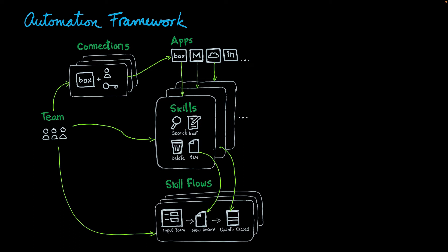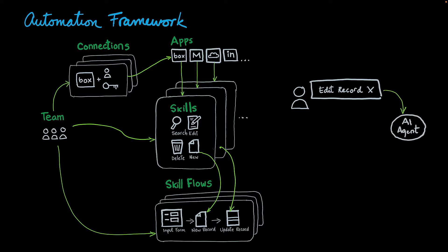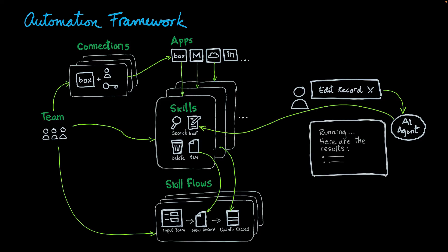And how do you use them? You use a conversational interface. You can say something like "edit record X," and the AI agent will understand your request, identify the best skill or skill flow for that particular request, and come back with the appropriate answer.